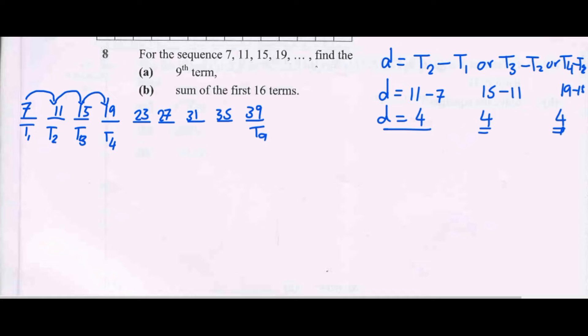The other way we can find the same answer is to use the formula. So Tₙ = a + (n-1)d, where n is the number of terms, in our case 9, first term is 7. So 9 minus 1 multiplied by common difference which is 4.